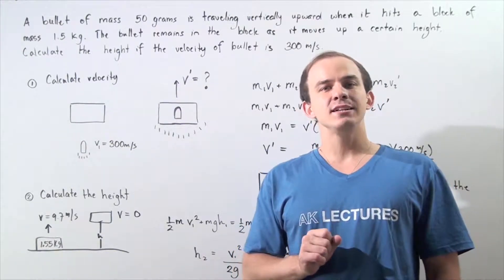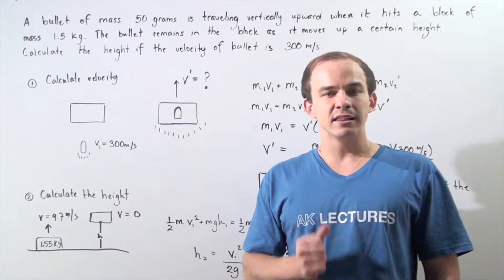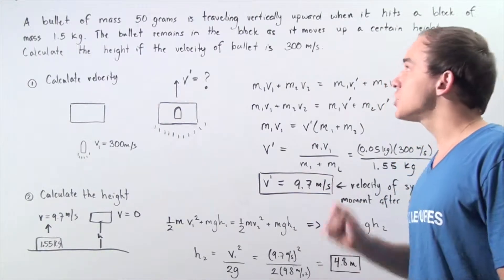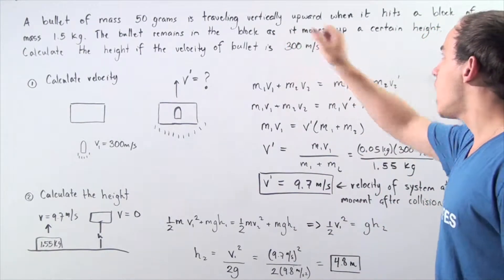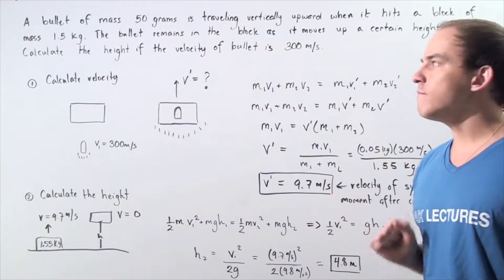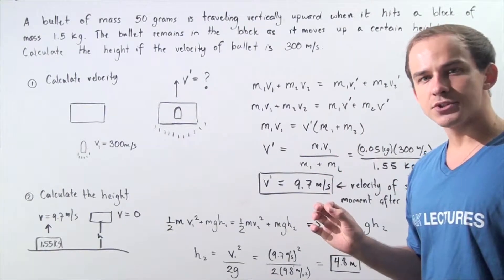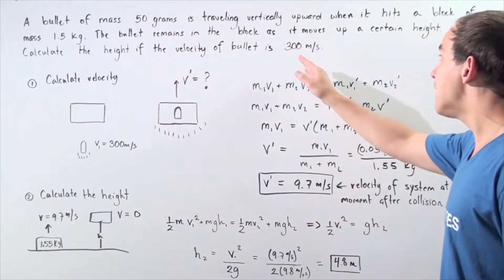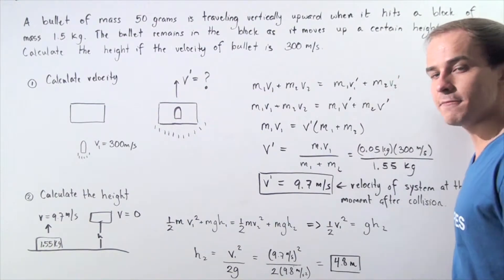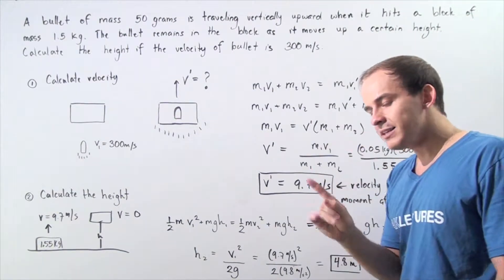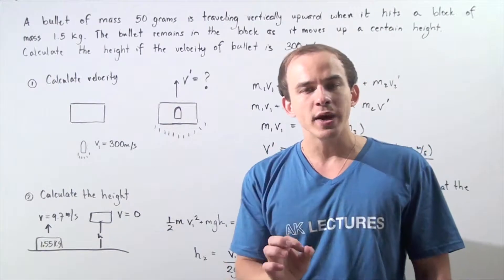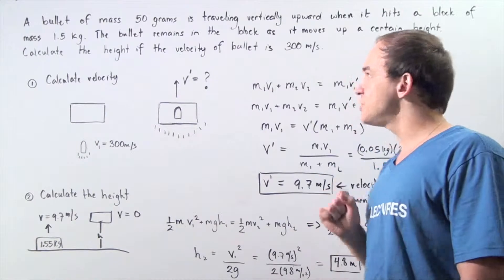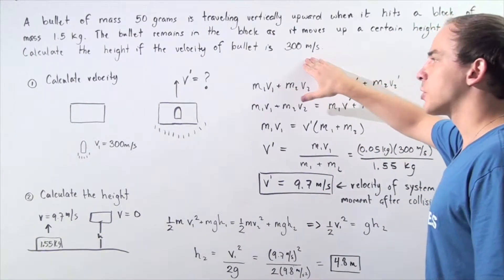Let's look at the following example that deals with a completely inelastic collision. A bullet of mass 50 grams is traveling vertically upward when it hits a block of mass 1.5 kilograms. The bullet remains inside the block as it travels up to a certain maximum height. We want to calculate this maximum height, knowing that the velocity of the bullet right before the collision takes place is 300 meters per second.